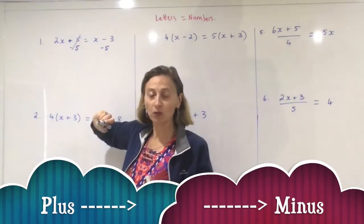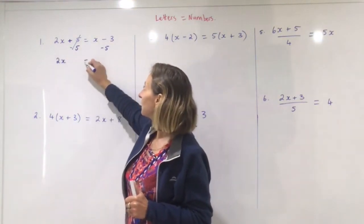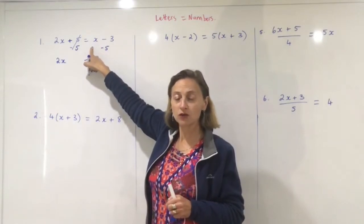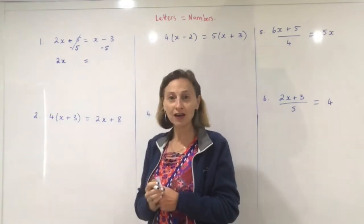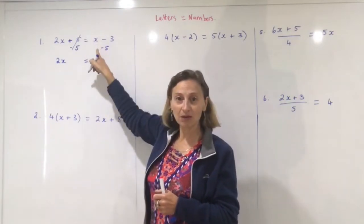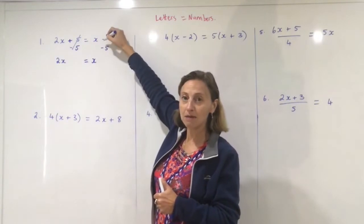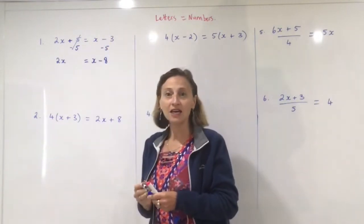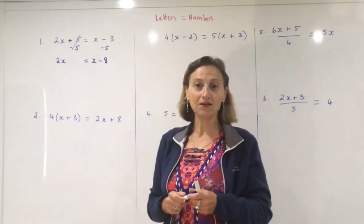They cancel — that was the whole point of doing it, to get rid of the plus five, and then I write down what's left. Over here we have x minus three minus five. Don't forget you're supposed to know how to do like terms — you would have learned that earlier in the year. You cannot add the x and the minus five because they are not like terms. So minus three minus five is minus eight. If you're not very good with negative numbers, you can watch one of my other videos on negative numbers.